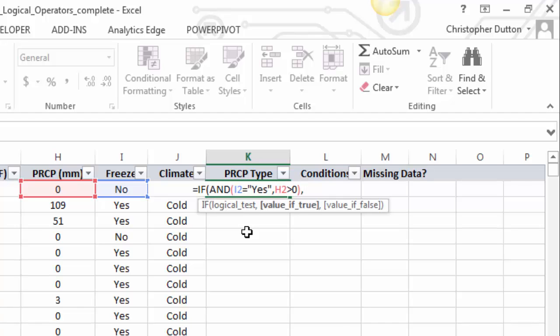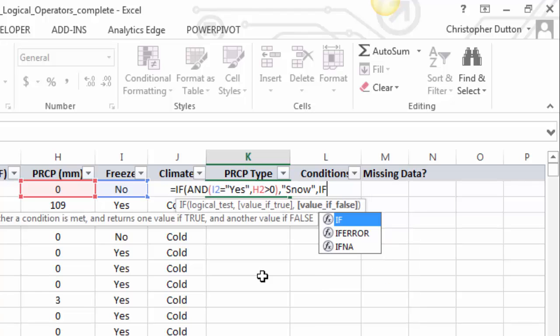Close the parenthesis because that's my full and statement, and then comma to my value of true. So if both of these are true, what's the deal? It's freezing, there's stuff falling from the sky, so the precipitation type is snow. And now I'm going to start with my second one. Again, I could go up here into the formula bar and copy this chunk and paste it. I'm going to type this one out just to walk you through it one more time. So, value of false, remember I have one more condition to test before I do my catch-all value. So I'm going to do another if and statement.